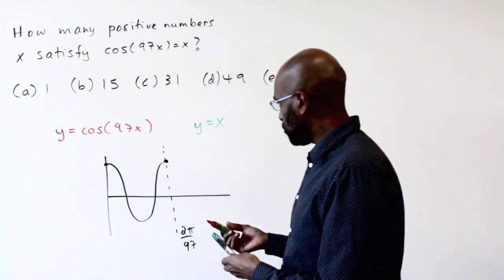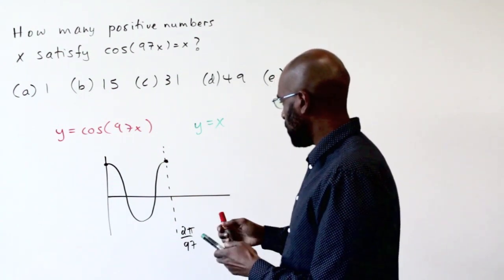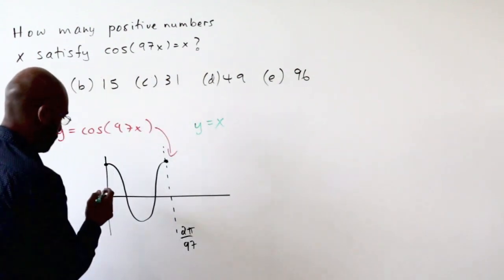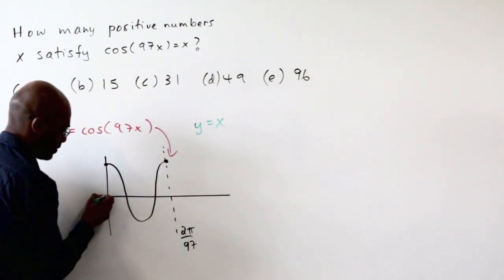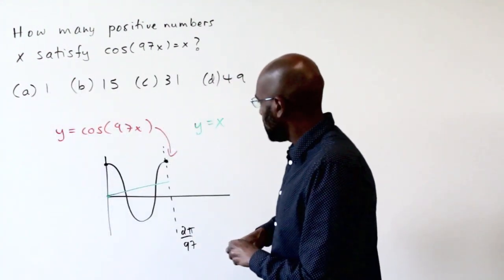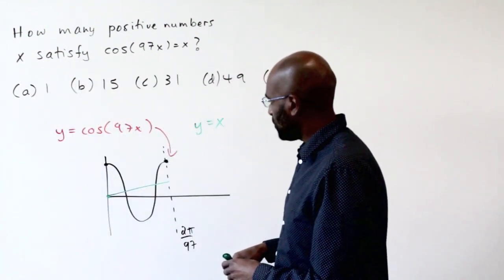And let me ask ourselves how many solutions we get. So there's a piece of the red graph. The green graph will look something like this. And so graphically, we see that there are about two solutions.